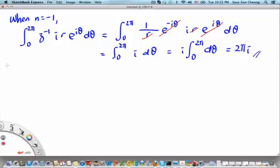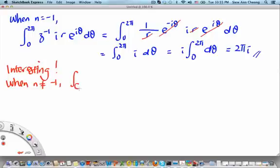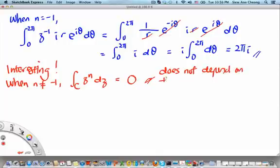So let's write down interesting here. So the first thing is when n is not equal to minus 1, this integral along the closed contour c of z to the n dz is equal to 0. It does not depend on the size of the contour.